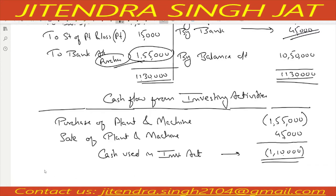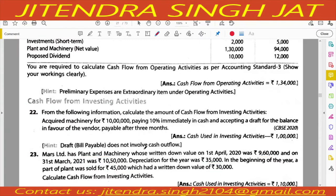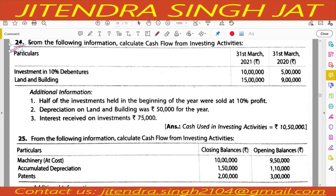I hope it is clear to everyone. Question number 24: from the following information, calculate cash flow from investing activity. Current year and previous year figures are given for investment and land and building — both come under investing activity. Additional information: half of the investment held at the beginning of the year were sold at a profit of 10 percent, so we need to prepare an investment account.